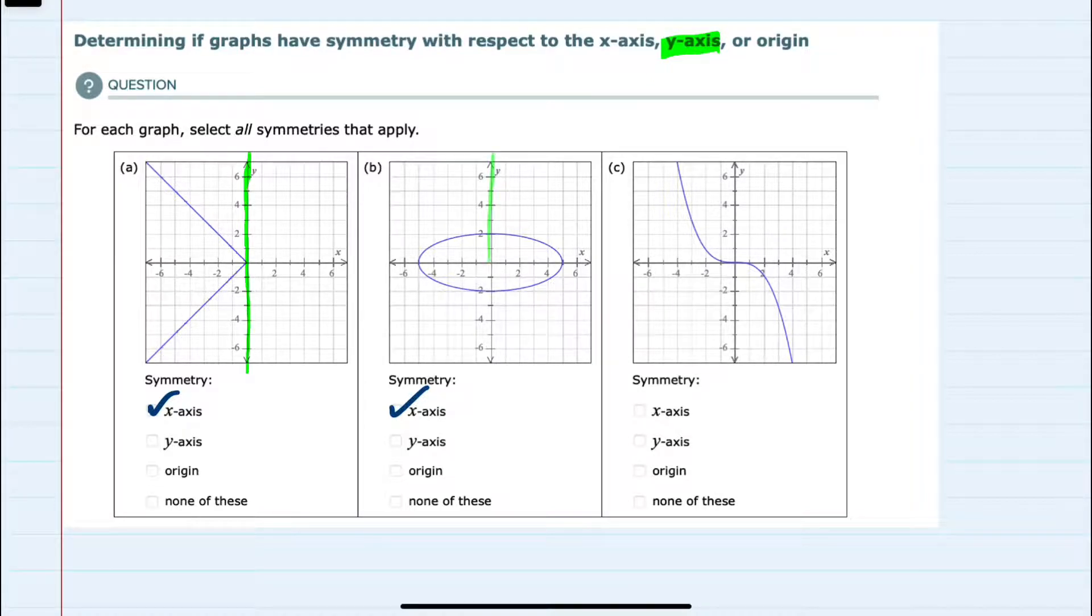if we look at the y-axis, to have y-axis symmetry, then every point to the left of the y-axis would have to have a corresponding point to the right, which doesn't happen in the first example, but does happen in the second example. Every point to the left of the y-axis has a mirror point on the right of the axis, so it does have y-axis symmetry.